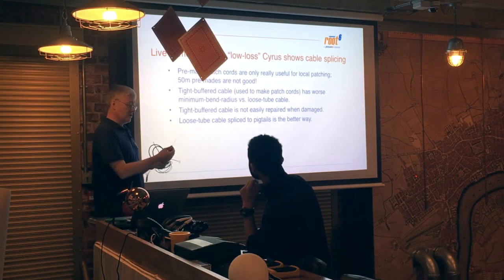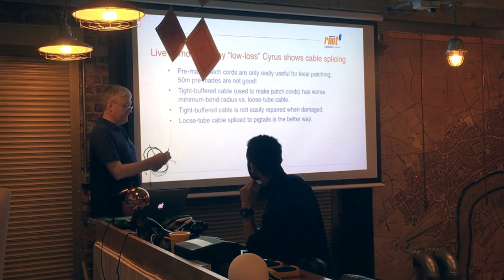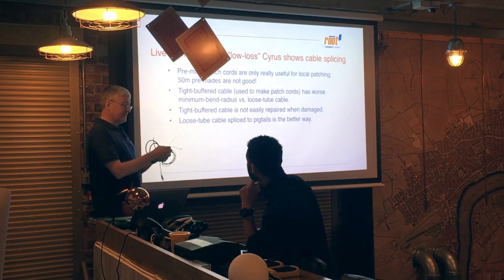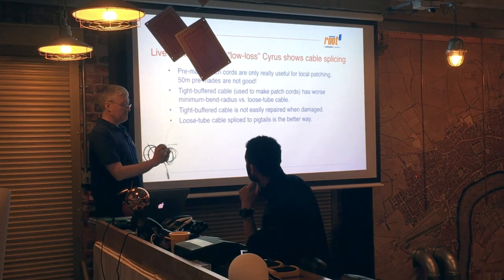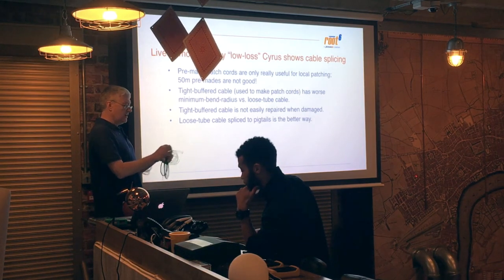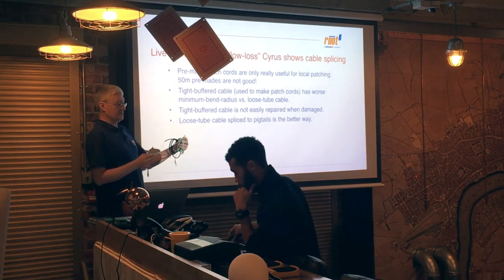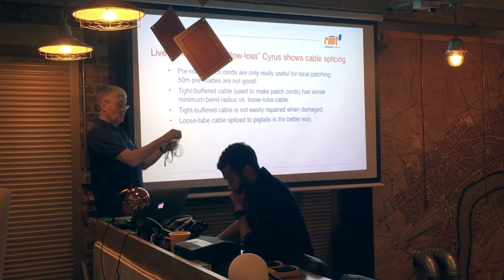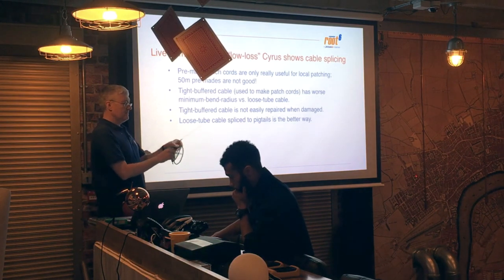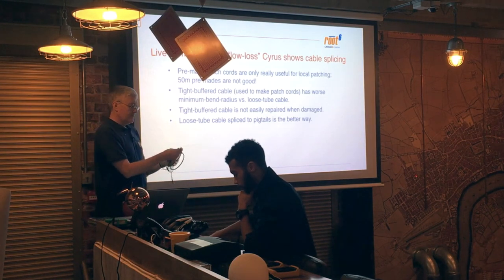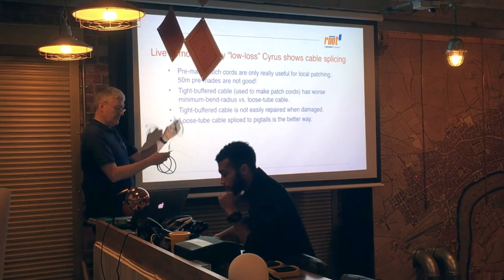For running through ducts and under floors, we recommend a loose tube cable. In this type, the actual glass fibres aren't adhered to anything — they sit in a plastic pipe full of mineral oil. One benefit is a much better minimum bend radius: with a tight-buffered cable, bending it sharply causes massive losses and risks damage. With loose tube, the fibres are able to slip and slide over each other within the oil bath, giving a much better minimum bend radius specification.